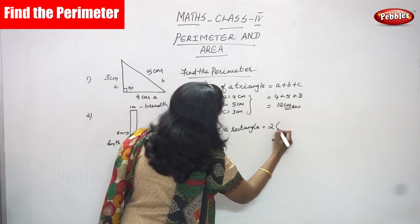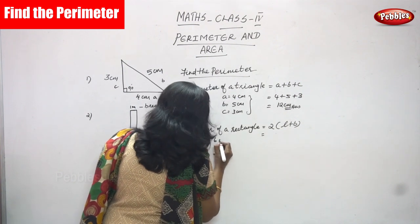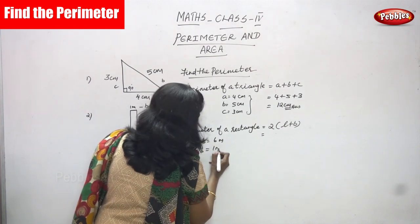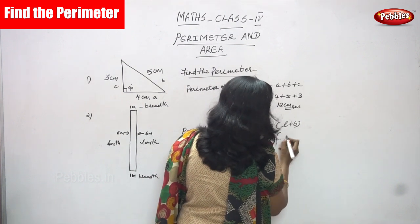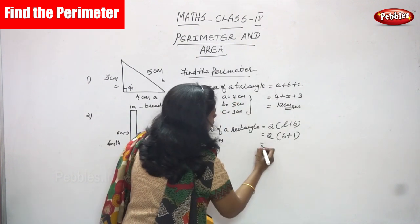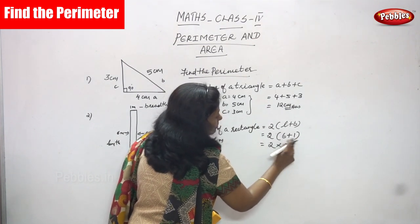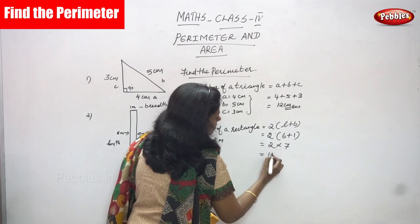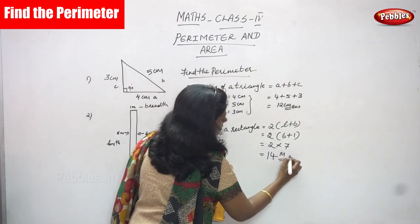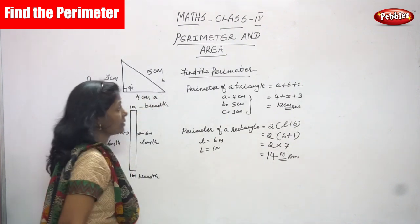The value of l is equal to six meters and the value of b is equal to one meter. Substituting into the bracket: six plus one equals seven. So perimeter equals two into seven, which equals fourteen meters. The perimeter of the rectangle is equal to fourteen meters. This is the correct answer.